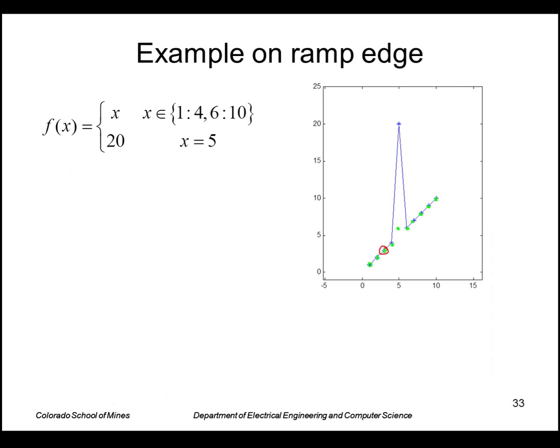As an example, take this case where I have a ramp and the ramp has a very large noise value right here. So if I go ahead and compute the filter here, let's say the width is 5. Okay, so I'll use a median filter of width 5, this is one dimension. So at x equals 3, my values that are in that set are 1, 2, 3, 4, and 20.